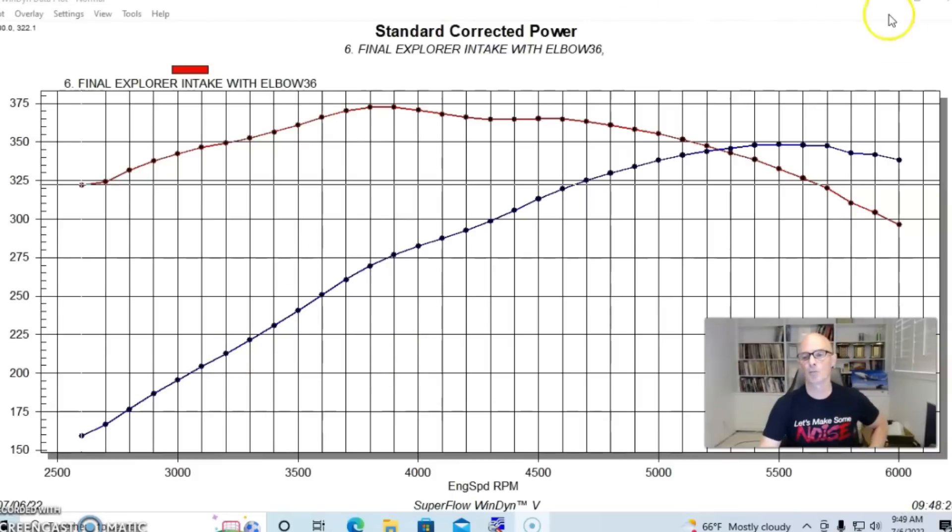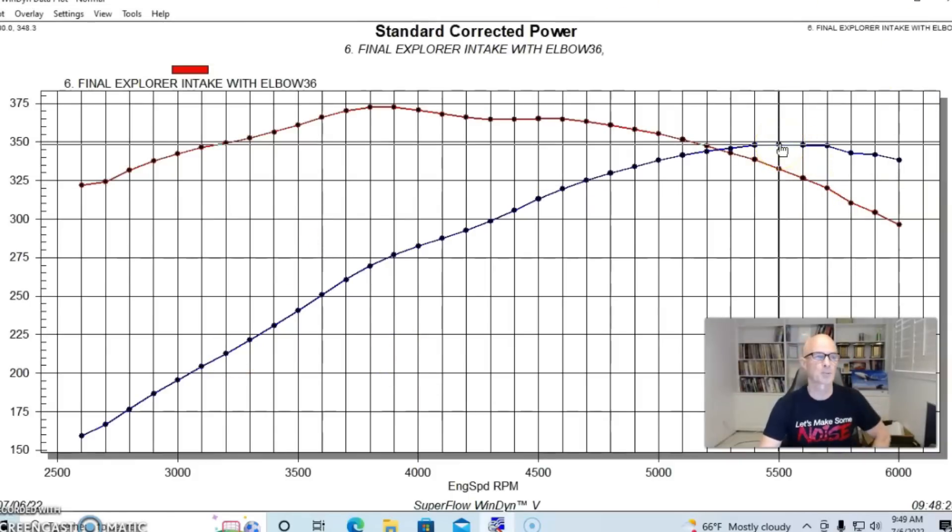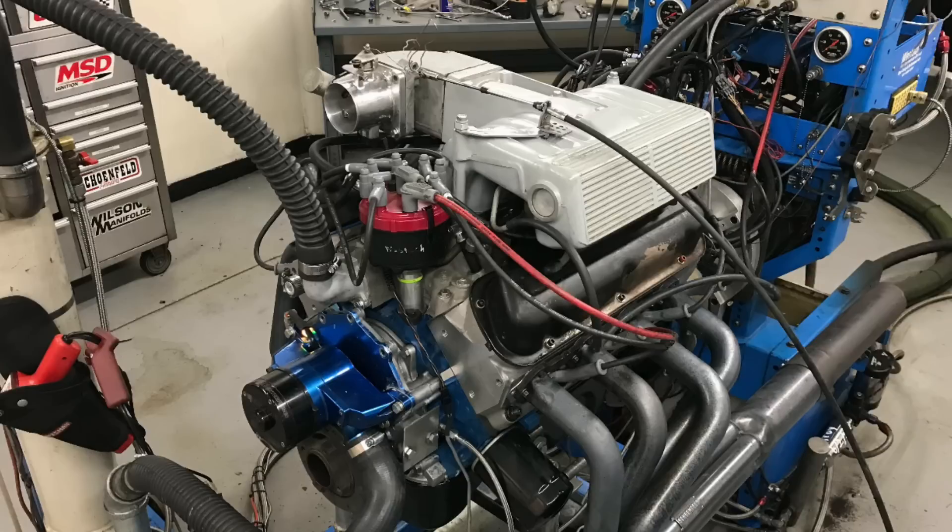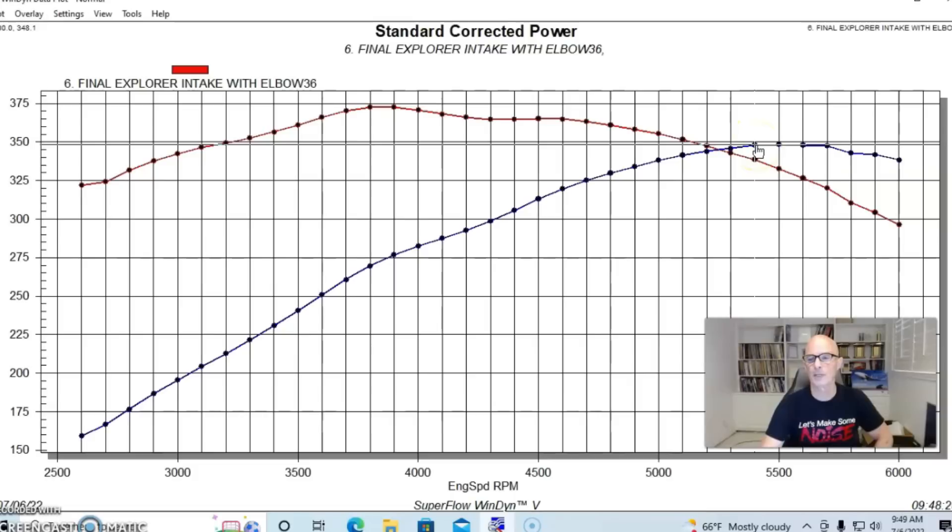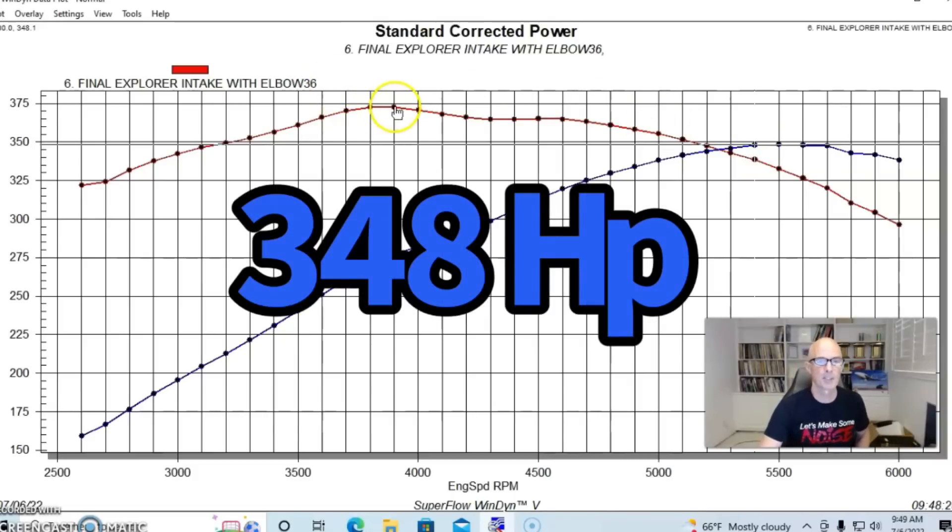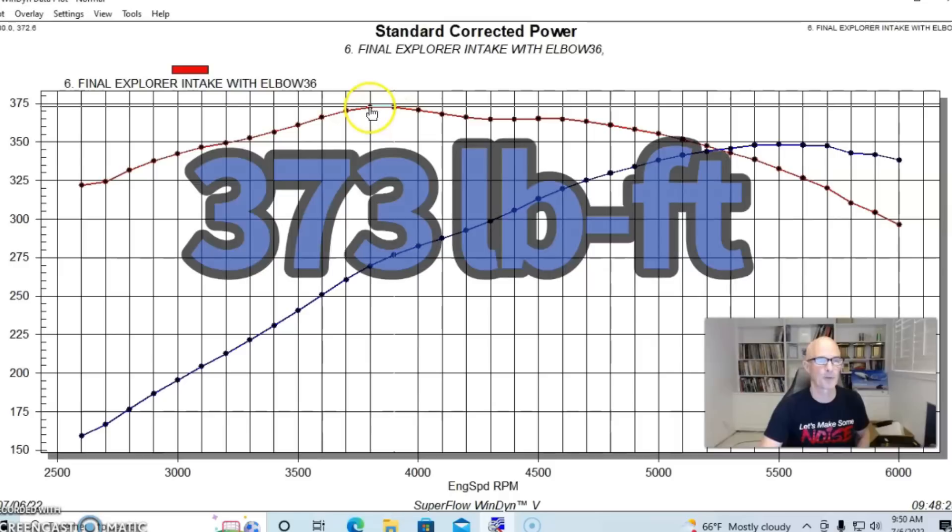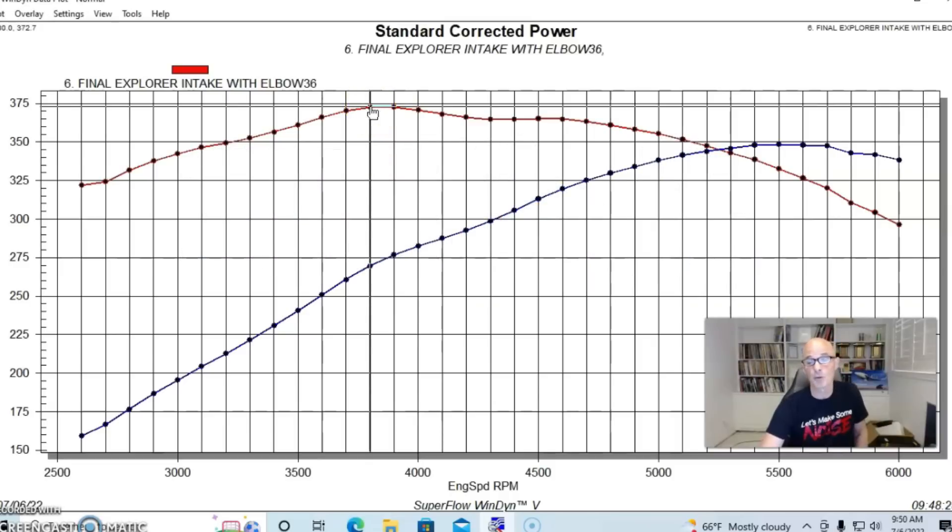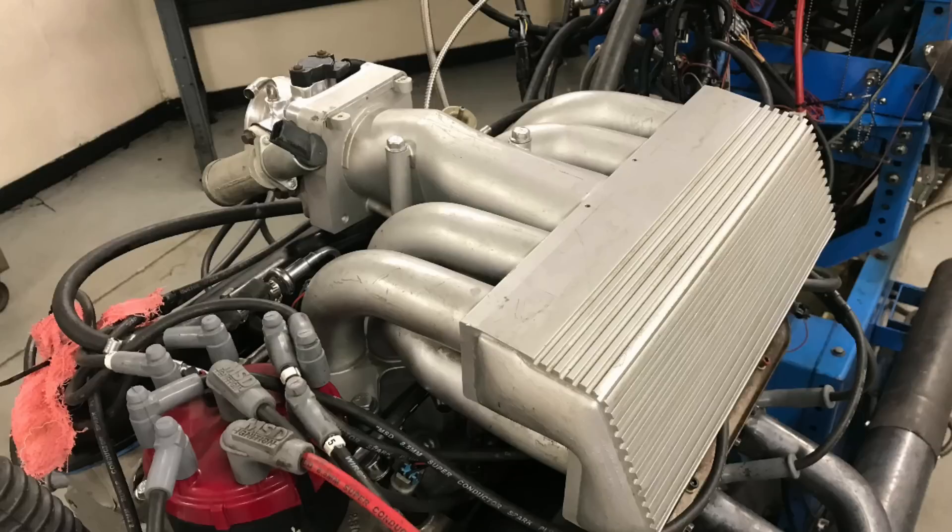So, on this Explorer combination, run with our 302, our modified 302, and equipped with the Explorer intake manifold, this thing just missed making 350 horsepower at 348. Peak torque checked in at 373 foot-pounds or 372.7. You can see it was down just a little bit, maybe, compared to the tubular GT40.